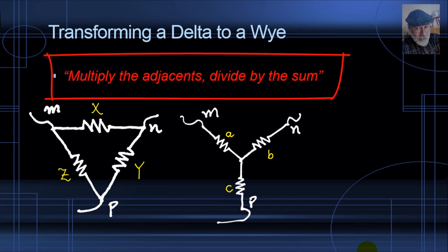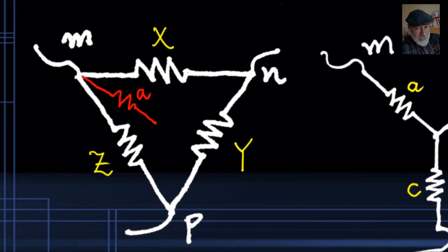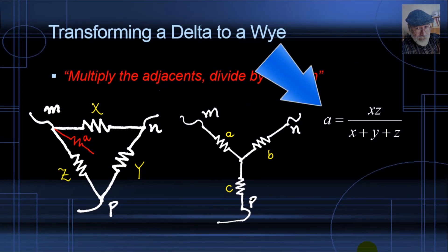Multiply the adjacents and divide by the sum. In our imagination, we superimpose resistor A onto the triangle and ask: who are the adjacent elements to A? Obviously X and Z. Multiply them, and divide by the sum. The value of resistor A in ohms is X times Z divided by X plus Y plus Z.